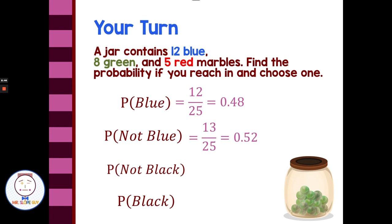Not black: there are only blue, green, and red marbles in the jar. When I reach in and grab a marble, all 25 are not black — so 25 out of 25, or 1. It is certain I will not draw a black marble. As for drawing a black marble, none of the marbles are black, so no matter what, I have a zero chance — probability of 0. Notice the difference: not black gives probability 1, drawing black gives probability 0.